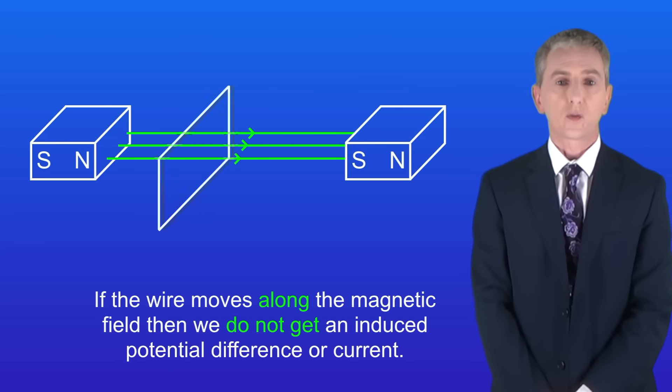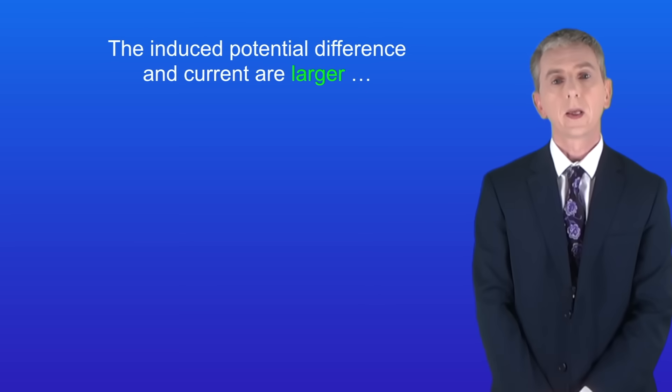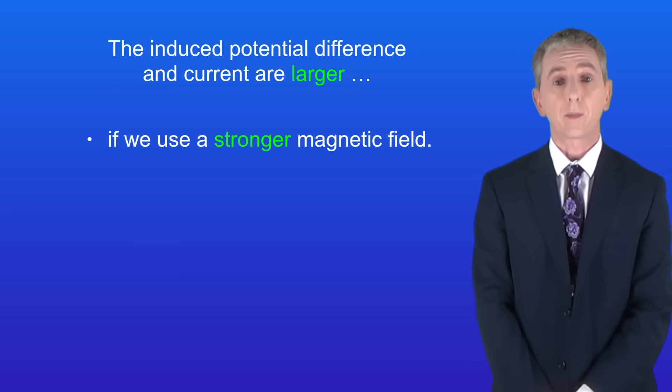Now the size of the induced potential difference or the induced current depends on three factors. The induced potential difference and current are larger if we use a stronger magnetic field, if we move the wire more rapidly, and if we shape the wire into a coil.